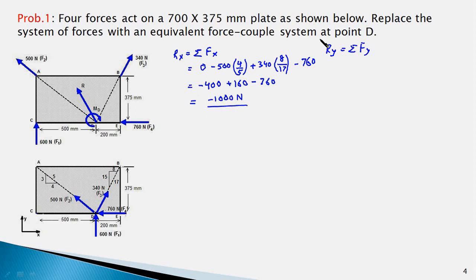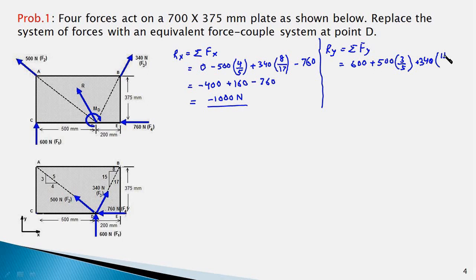Let us now work out the y component of the resultant force R. F1y is 600; F2y is 500 times 3 over 5, which is 300; F3y is 340 times 15 over 17, which is 300; and F4y is 0 because F4 acts only in the x direction. So Ry = 600 plus 300 plus 300, which works out to 1200 newtons.